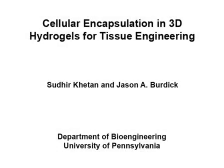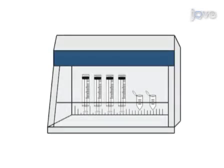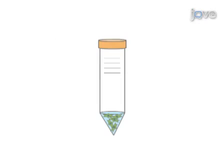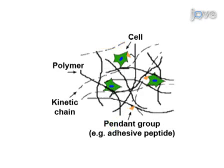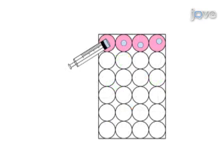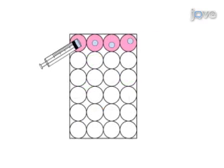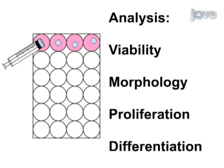The stepwise process for encapsulating cells starts with preparation and sterilization of hydrogel molds and other materials, followed by isolation of cells into individual populations in tubes for each gel set. Gelation is then performed in the presence of cells, followed by the in vitro or in vivo incubation period. Downstream analysis for cell behavior may include tests for viability, morphology, proliferation, and differentiation.